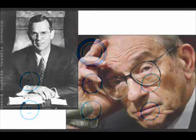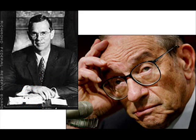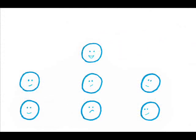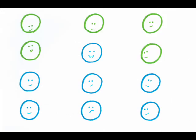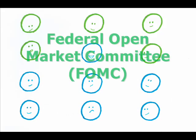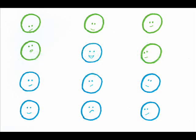Both Alan Greenspan and William McChesney Martin each served for nearly 20 years. The seven-member Governing Board is a subset of the larger 12-member Federal Open Market Committee, or FOMC, which is the policy-making group within the Fed.